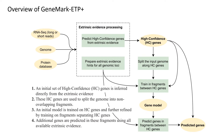With the previously mentioned design considerations in mind, we developed GeneMark ETP+. The algorithm starts by inferring a set of reliable gene structures directly from the protein and transcript evidence. The resulting reliable genes, also called high-confidence genes, are used to split the genome into non-overlapping fragments. After that, a species-specific model is trained to predict genes in the fragments between high-confidence genes. All sources of transcript and protein evidence, even less reliable ones such as alignments of remotely homologous proteins, are used to improve the final predictions in the genomic fragments.